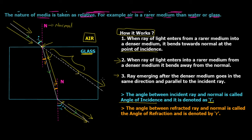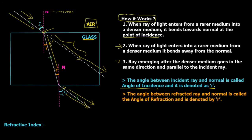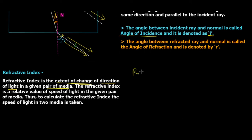Now let's look at refractive index. Refractive index is the extent of change of direction of light in a given pair of media. It is the relative value of speed of light in the given pair of media. To calculate it, we take the speed of light in two media. The formula for refractive index RI is v1 divided by v2, where v1 is speed of light in medium 1 and v2 is speed of light in medium 2.